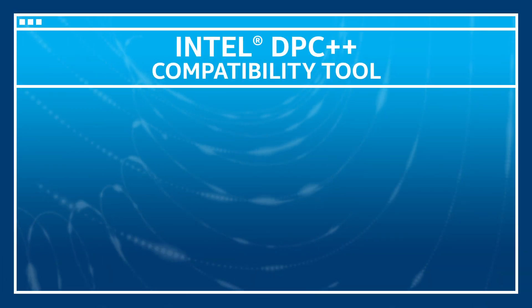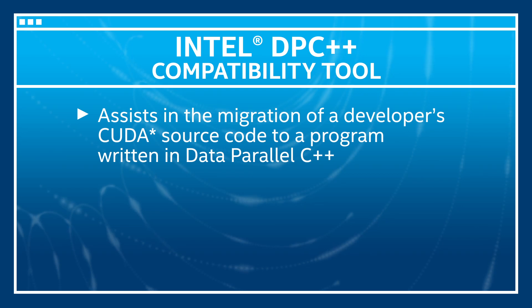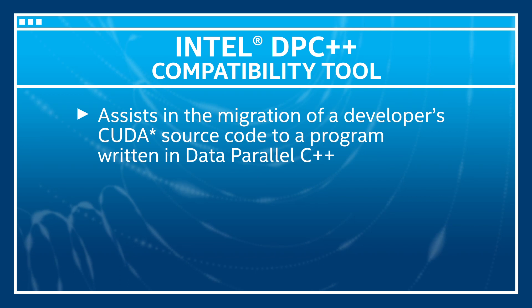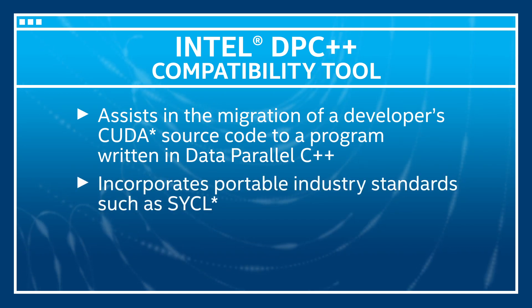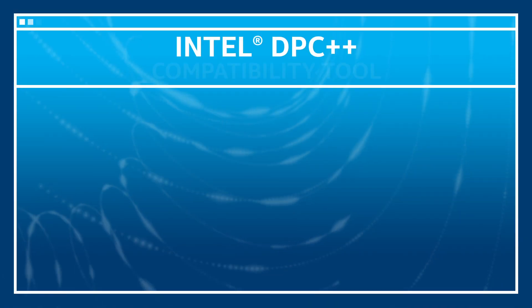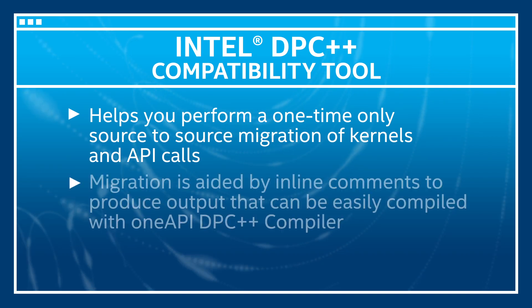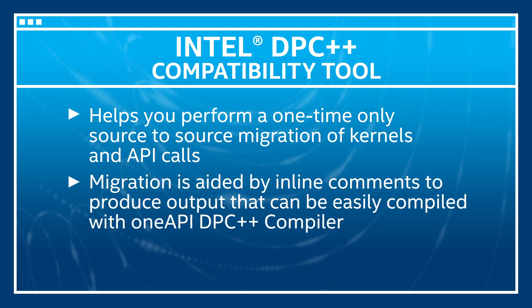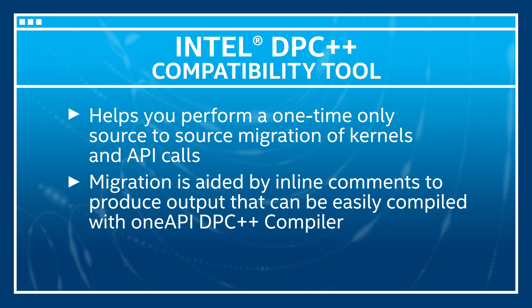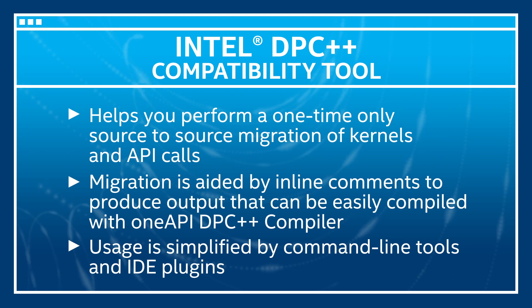The Intel DPC++ compatibility tool assists in the migration of a developer's program written in CUDA to a program written in data parallel C++, which is based on modern C++ and incorporates portable industry standards such as SYCL. The DPC++ programming model will be familiar if you've used kernel-based programming. The tool helps you perform a one-time only source-to-source migration of both kernels and API calls. The migration is aided by inline comments for parts of code which could not be migrated automatically, and its usage is simplified by command line tools and IDE plugins.